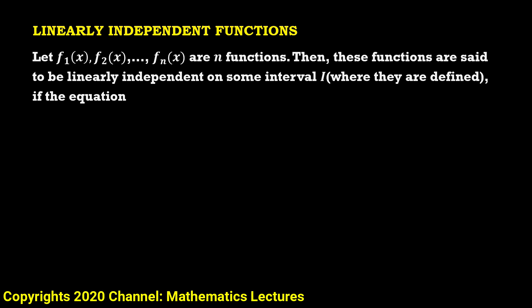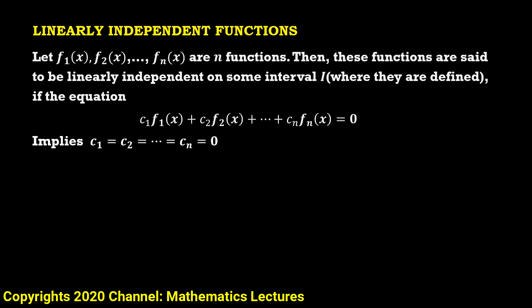Let f1 of x, f2 of x, up to fn of x be n functions. Then these functions are said to be linearly independent on some interval I where they are defined, if the equation c1·f1(x) plus c2·f2(x) plus up to cn·fn(x) equals 0 implies c1 equal to c2 equal to ... equal to cn equal to 0.